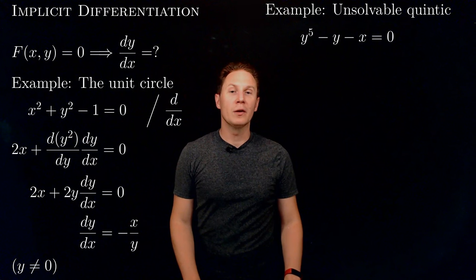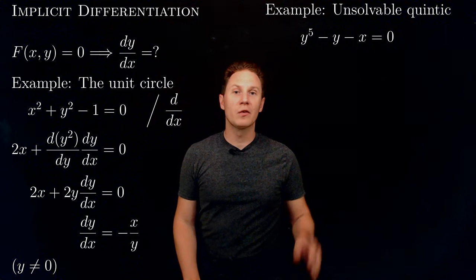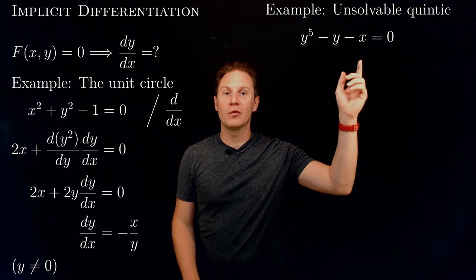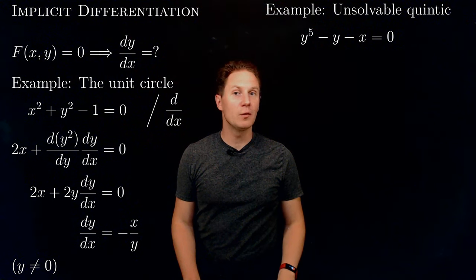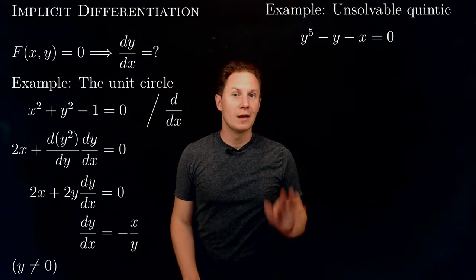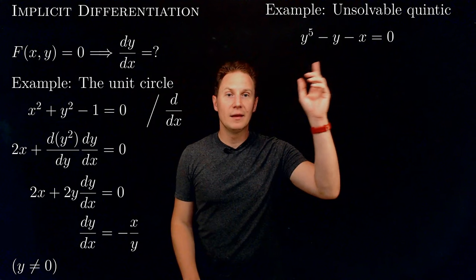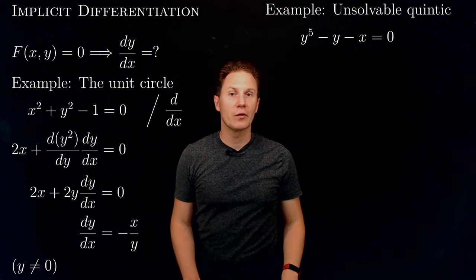Let's look at another example. Here is an unsolvable quintic equation — quintic because it's degree 5 in y — so it's y to the 5 minus y minus x equals 0. Think about how you would find the derivative of y with respect to x using this equation. Don't try to solve it for y because it has been proven that this equation in general cannot be solved for y as a function of x.